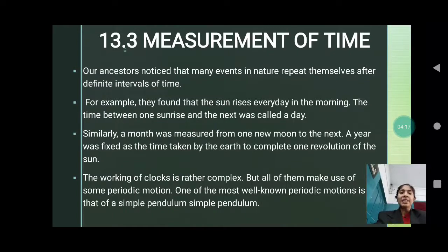Our next topic is 13.3 measurement of time. Our ancestors noticed that many events in nature repeat themselves after definite intervals of time. For example, they found that the sun rises every day in the morning. The time between one sunrise and the next one is called a day. Similarly, a month was measured from one new moon to the next new moon. A year was fixed as the time taken by the earth to complete one revolution of the sun. The working of clock is rather complex, but all of them make use of some periodic motion. One of the most well-known periodic motion is a simple pendulum.